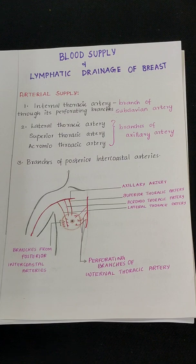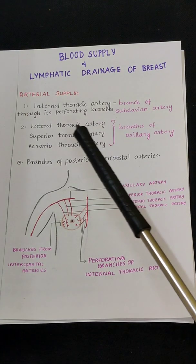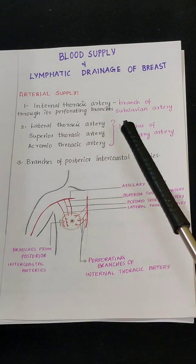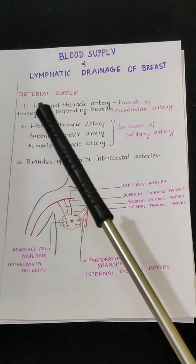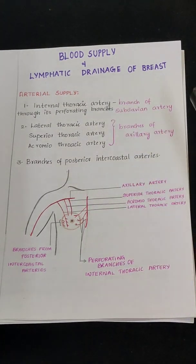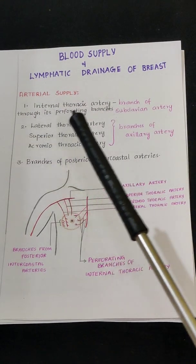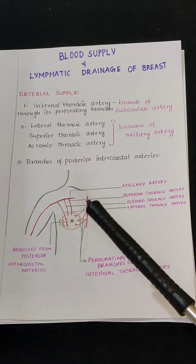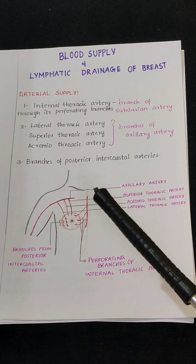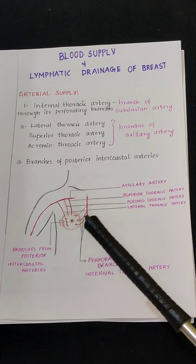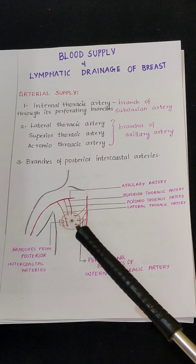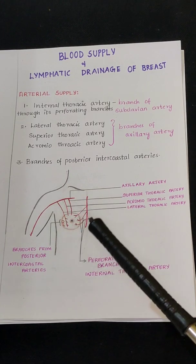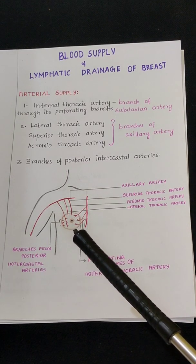The first one is the arterial supply. The internal thoracic artery, which is a branch of the subclavian artery, provides arterial supply to the breast through its perforating branches. You can see this is the internal thoracic artery, and these are the perforating branches of the internal thoracic artery that provide the arterial supply to the breast.